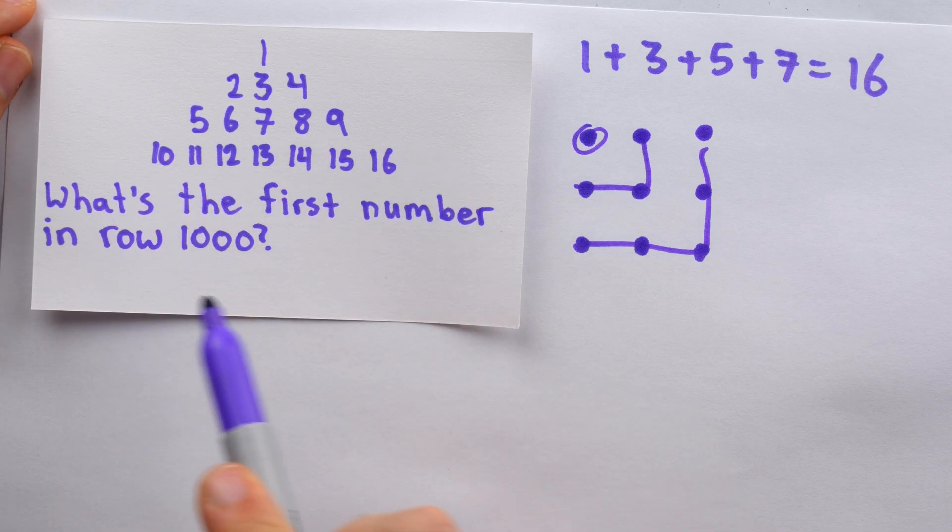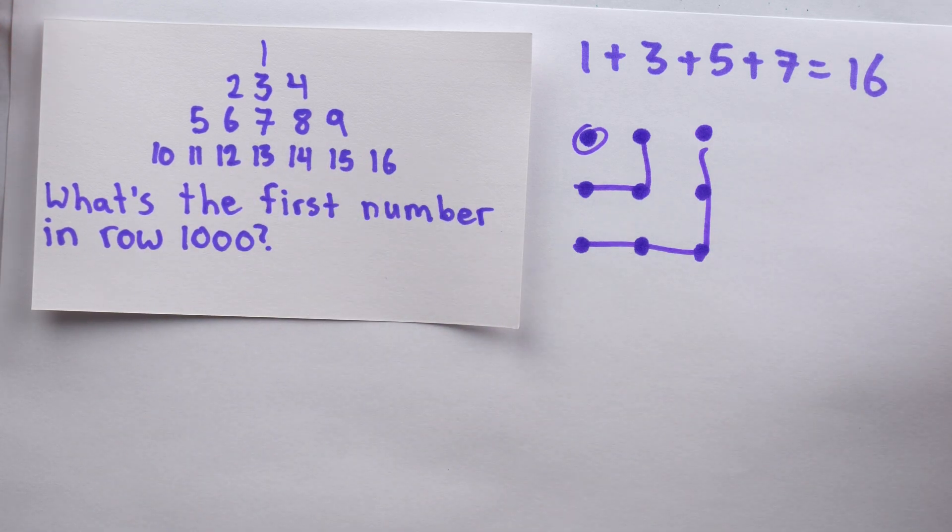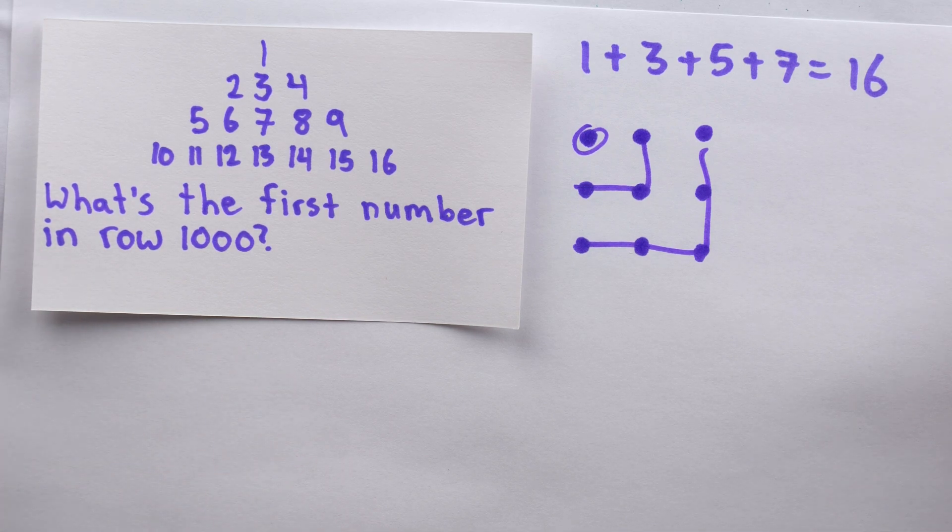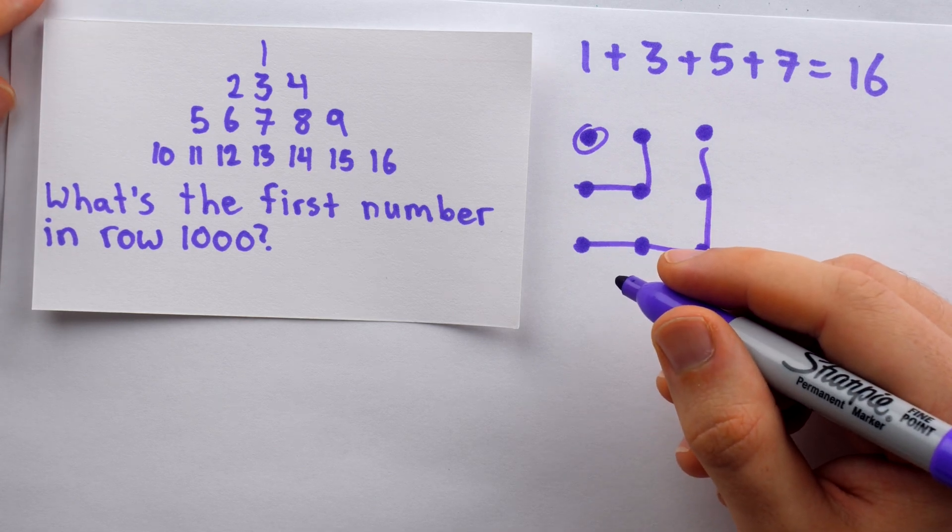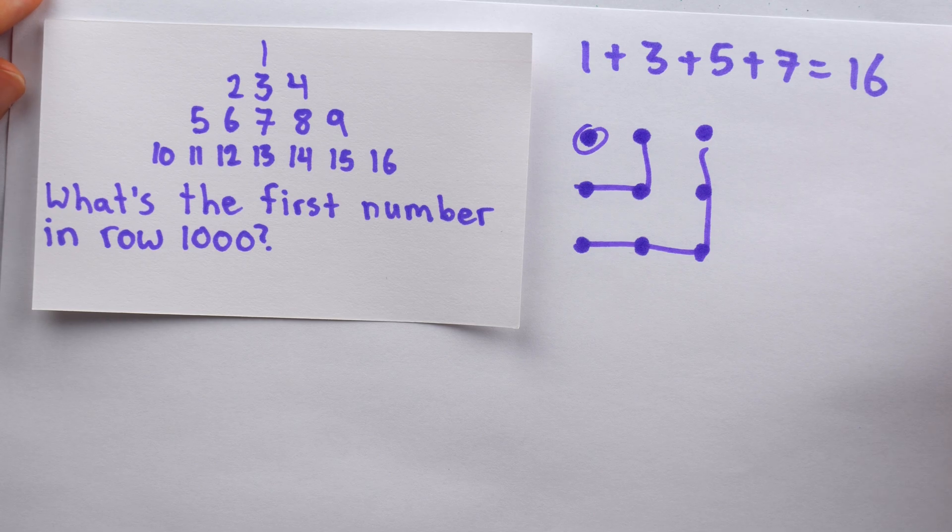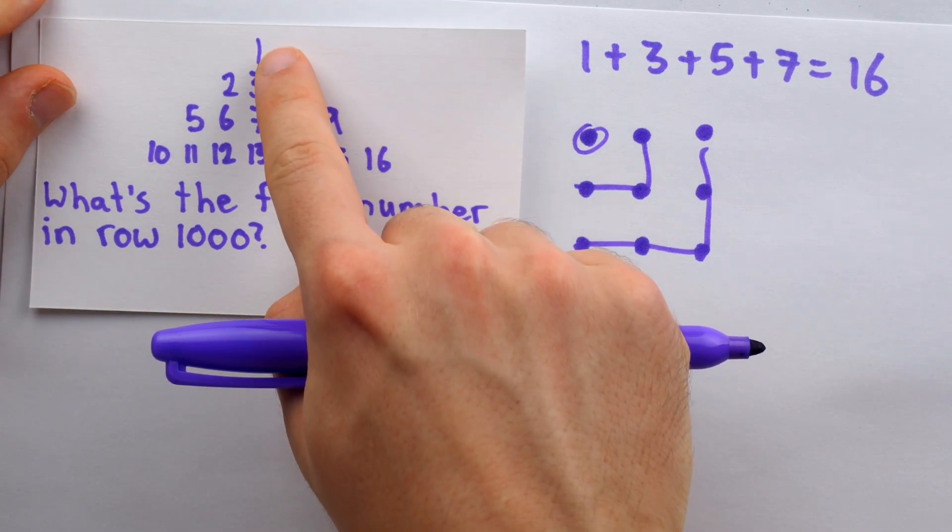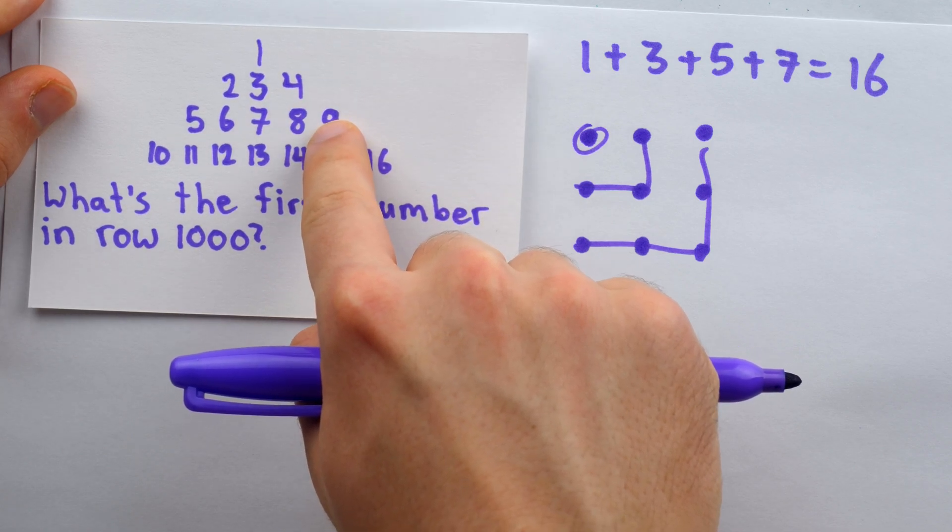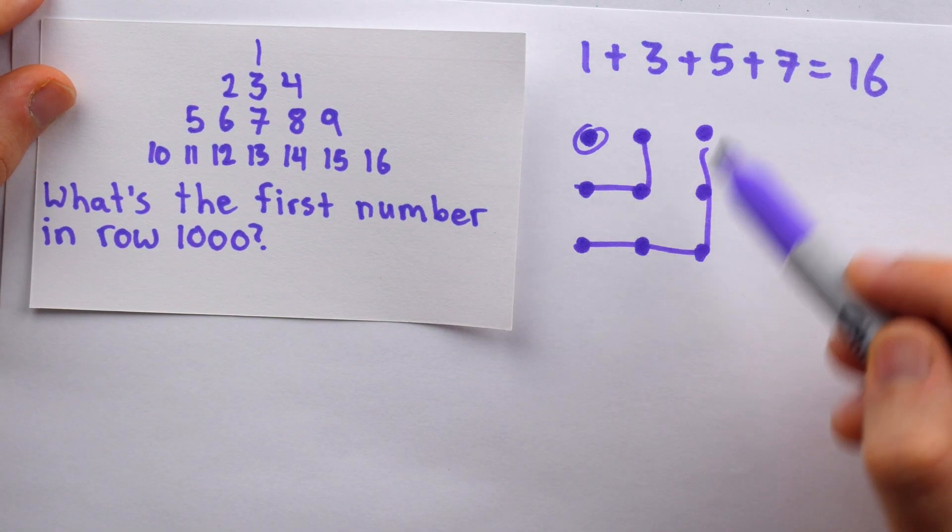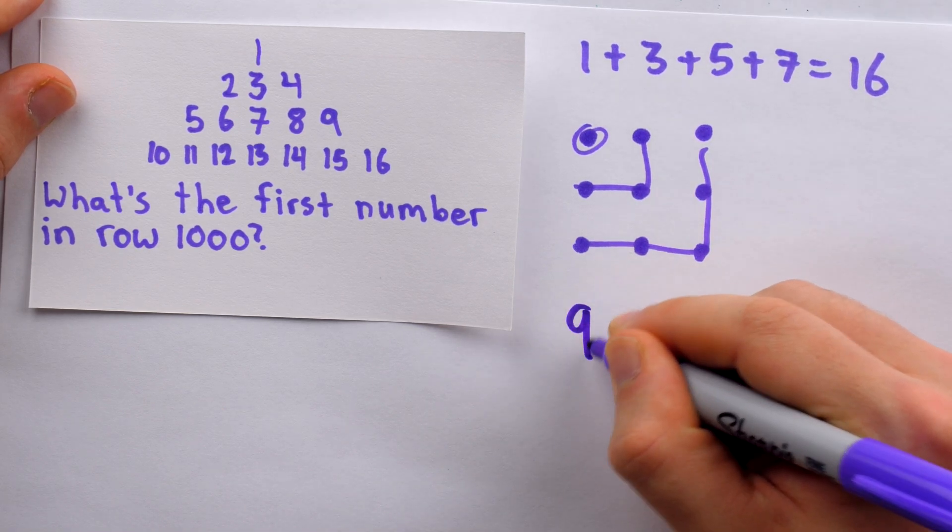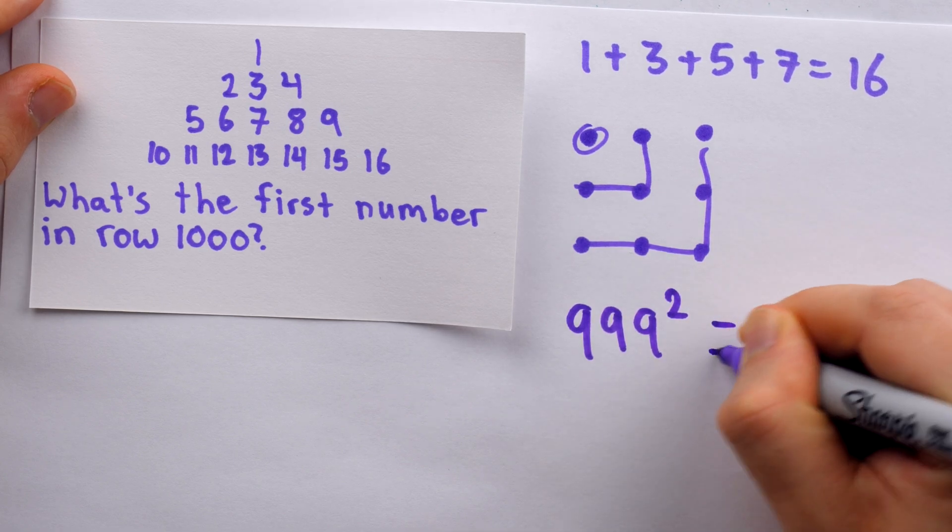And so to find the first number of row 1000, we'll look at the last number of row 999, and then add 1 to that. So how do we find the last number of row 999? Well, we know that it's going to be 999 squared. The end of row 1 is 1 squared. The end of row 2 is 2 squared. The end of row 3 is 3 squared, because of this relationship between adding odds and the square numbers. So the end of row 999 is 999 squared. And thankfully, squaring that is a piece of cake.